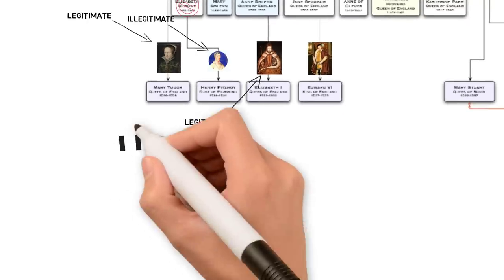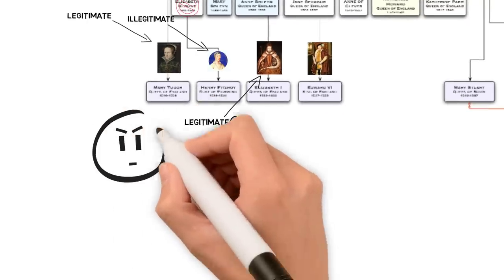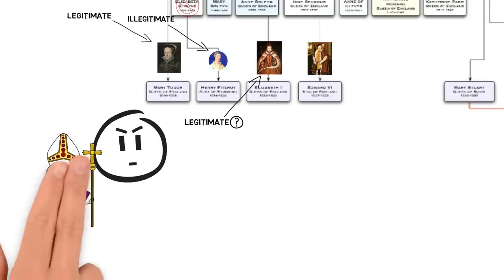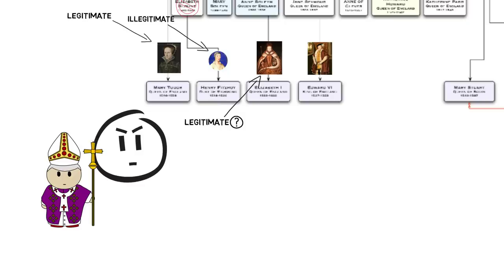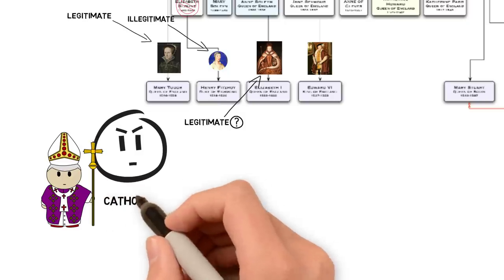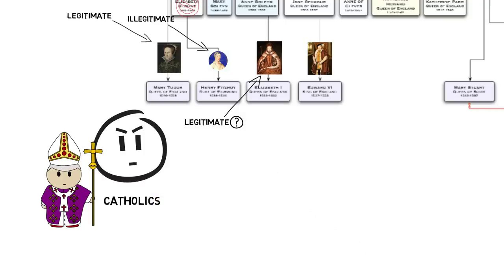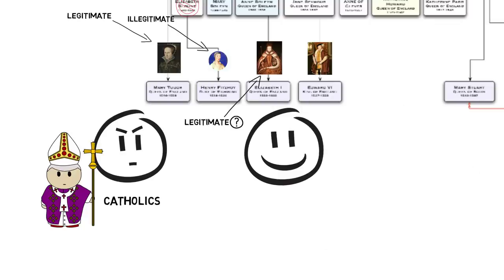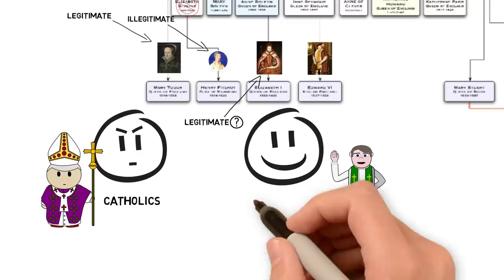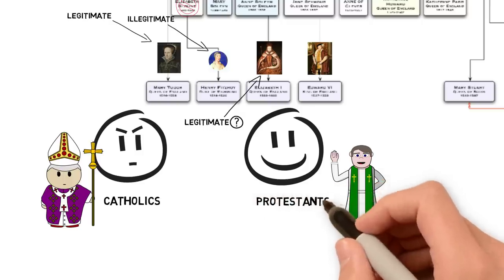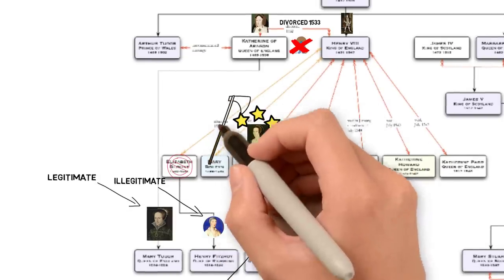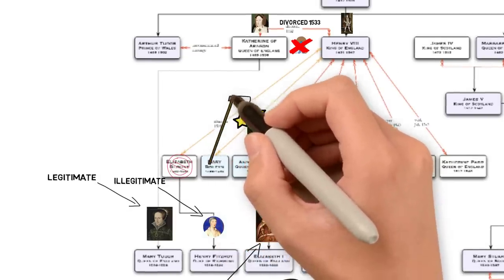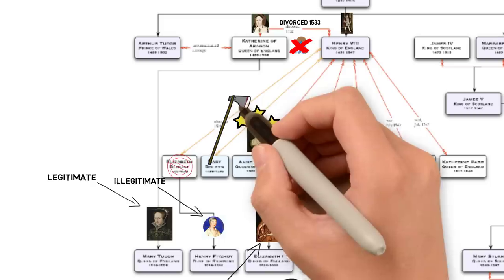Several groups disagree. They believe that Henry's marriage to Catherine of Aragon was never legally divorced, that Henry did not have the right to make that decision, and therefore his marriage to Anne Boleyn is illegal — making Elizabeth illegitimate. However, Elizabeth does have some people on her side who agree that the king has authority in his own country. Mostly, these people are Protestants.